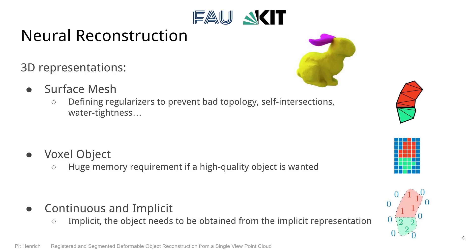Currently, the resolution-memory trade-off makes voxels impractical if the object is both large and has fine details. As an alternative, you can use a function that implicitly defines clusters in 3D space, where objects are defined as the boundaries between clusters. You can interpret this as a continuous and functional representation of voxel objects. So instead of querying a 3D array to find the color or density at voxel XYZ, you evaluate a function at XYZ that outputs the color or density. As this is a simple continuous function, we can train a neural network to approximate it.